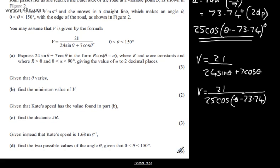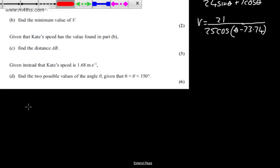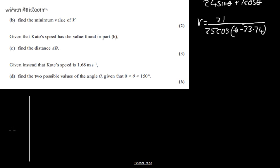So if we think about this now, this is a cosine curve with two different transformations. So our two transformations, we've got a scale factor stretch of 25 in the positive Y direction and we've got a translation of 73.74 degrees in the positive X direction. So what it's going to look like is something like this. And this is a very rough sketch. It's not brilliant, but it will give us some idea. Now we're interested in theta between 0 and 150 degrees.